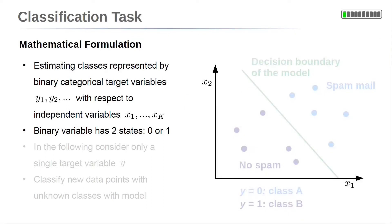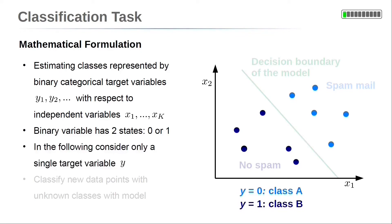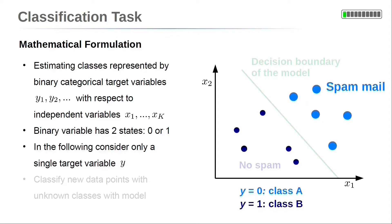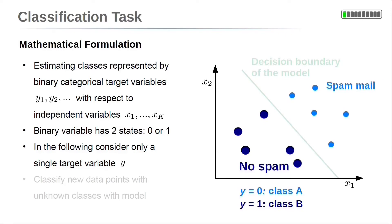In the largest part of this lecture, we consider more simple classification problems with two classes only. Here we consider an example with class A, the light blue dots, and class B, the dark blue dots. For this specific problem, we need a single target variable y only. y equals 0 gives class A (the light blue dots) and y equals 1 gives class B (the dark blue dots). An example for such a classification is spam mail detection — a mail can be either spam, which gives class A, or no spam, which gives class B.